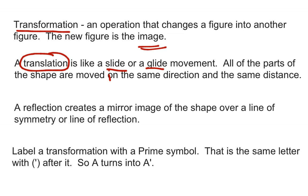The second transformation that we're studying is a reflection. A reflection creates a mirror image of the shape over a line of symmetry or a line of reflection. And those are the same thing. Two ways to say the same thing. A line of symmetry is also called a line of reflection.